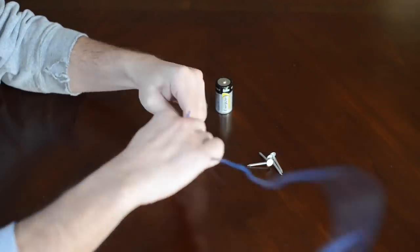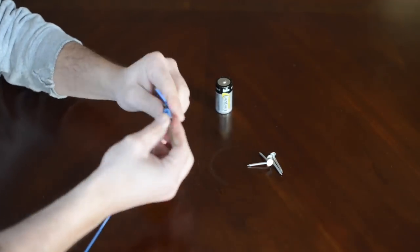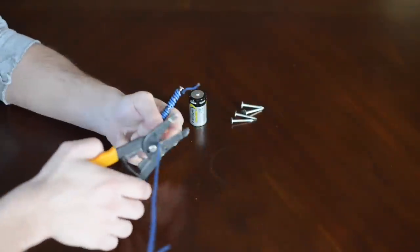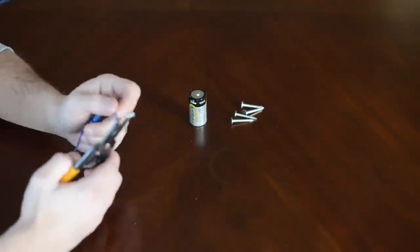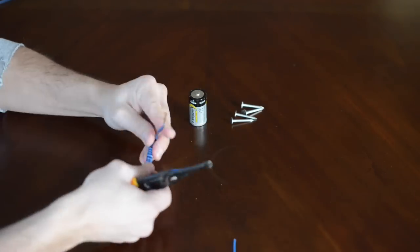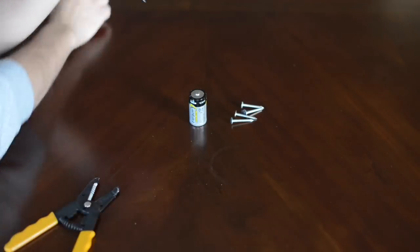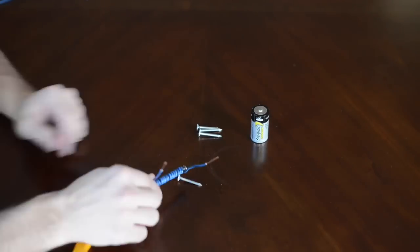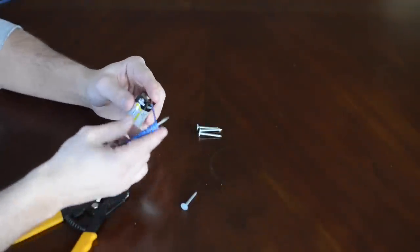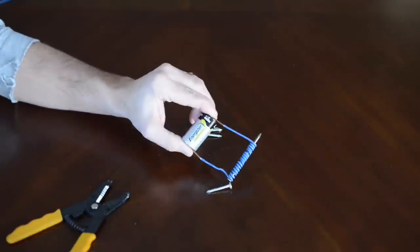So first you're going to take your nail and wrap your wire around your nail. And then once you have it all wrapped up, you can take off the coating, strip the wire, so you can see the wire. And then you will attach it to either end of your battery. You can see that it's not picking anything up right now. It's not magnetic. And then as soon as you hook it up to the battery, it's magnetic.